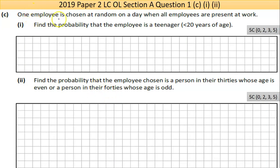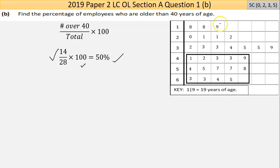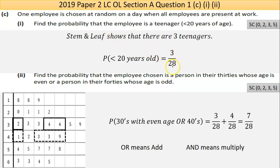Part C says: one employee is chosen at random on a day when all employees are present at work — so all 28. That's the total number of possible employees. We're looking for the probability that the employee is a teenager. Flipping back to the data, these are all the people who are less than 20 — there are three of them. So three out of 28 is the answer.